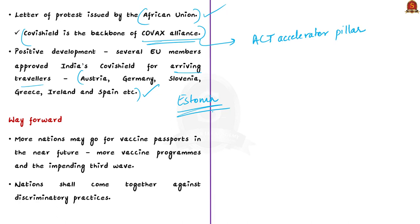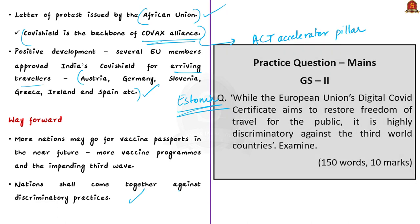Travel restrictions can simply require that travelers be vaccinated, but countries should not adopt discriminatory practices like the Green Pass, which fails to recognize vaccines mostly used by developing countries. It is advisable that countries planning similar mechanisms ensure their policies are not discriminatory to anyone. These are the key points from this editorial article.